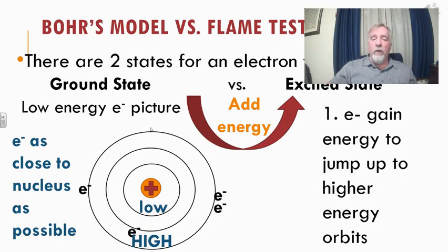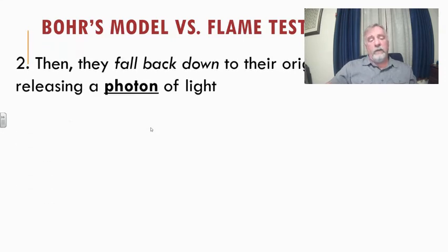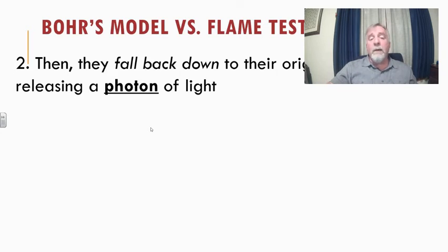When an electron goes from the ground state to a higher state it gains energy — from heat in a flame or from a photon hitting it. We call that jumping to higher energy orbits the excited state. But at some point those electrons are going to fall back down. When they fall back down to their original orbit, they're losing energy. Since energy is conserved, that energy gets released as a photon of light — and light is a form of energy.